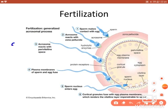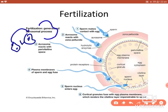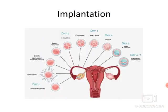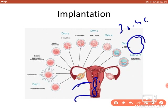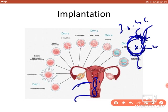Coming to fertilization: the pronucleus of the sperm and the pronucleus of the ovum unite to form a single-cell structure called the zygote, and that process is termed fertilization. In this diagram showing the uterus and vagina, some 300 to 400 million sperms enter the vagina and uterine cavity, but only 300 to 400 will reach the secondary oocyte. Only one sperm penetrates the zona pellucida and fuses with the ovum.